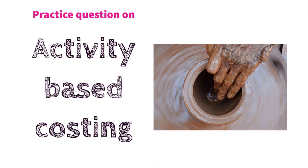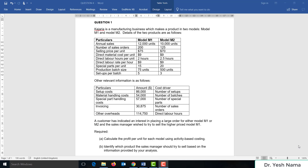Hello everyone, this is Yash Nama. Thank you for joining me on this video. This is a practice question on activity-based costing. Kajaria is a manufacturing business which makes a product in two models: Model M1 and Model M2.